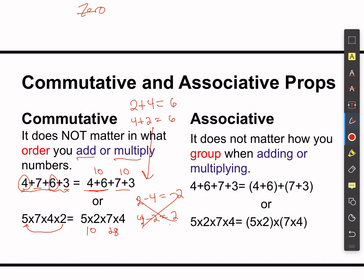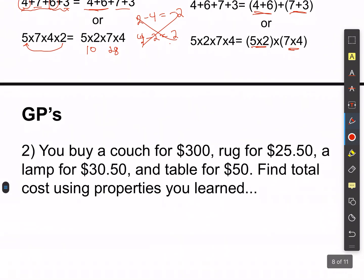The associative property is kind of similar — it's about grouping when you add or multiply. Associative just means you can associate with whoever you want if you're adding or multiplying: 4 and 6 together, 7 and 3 together, 5 and 2 together, 7 and 4 together. They're very related properties, and again it's just important that you know the rules.